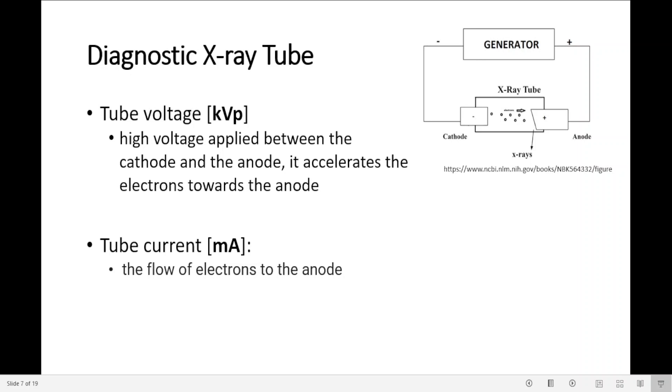Tube voltage is the high voltage applied between the cathode and the anode. We can see here high voltage being applied between the cathode and the anode. It accelerates the electrons towards the target, towards the anode. The tube current is the flow of electrons to the anode.